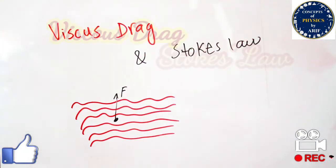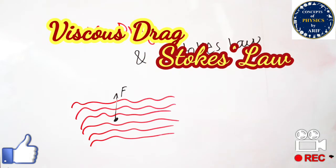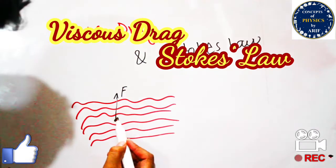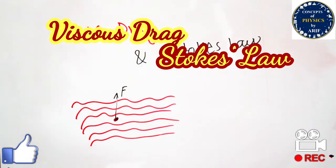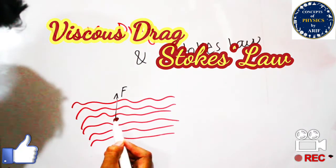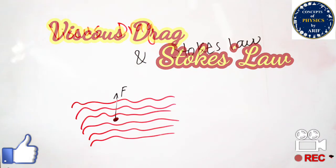Hi guys, welcome to my YouTube channel. In this video we will briefly discuss viscous drag and Stokes' law. The definition of viscous drag comes from viscosity. Viscosity is a frictional effect between the different layers of a flowing fluid — the force or frictional effect between these layers is termed as viscosity.